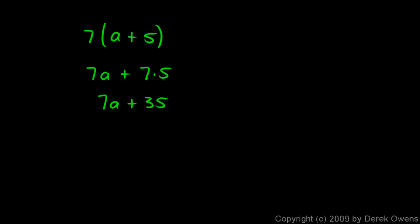This mathematical expression, 7 times parentheses a plus 5, is mathematically equivalent to this one, 7a plus 35. And being able to get from here to here correctly is very, very important.